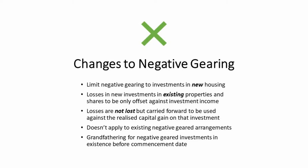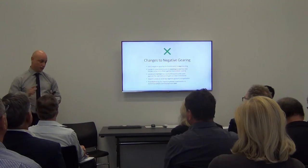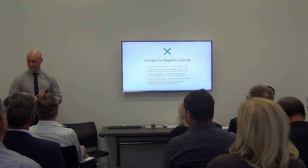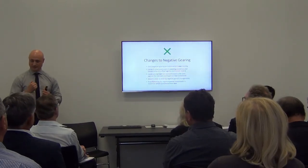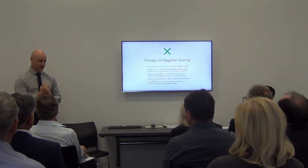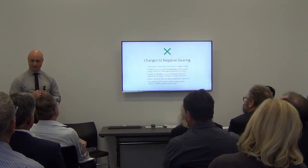Losses on new investments in existing properties will be quarantined. So if you make a negatively geared investment — where your rental expenses are greater than your rental income — on existing property that you buy after the commencement date, those losses can be offset against other forms of investment income, such as dividends, interest, or positively geared rental properties. But the balance will be quarantined, meaning that loss is deferred and carried forward, and can only be used when you sell that particular investment — applied against a capital gain to reduce it — and you pay tax on the difference.